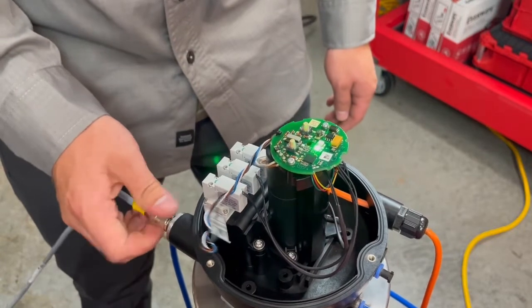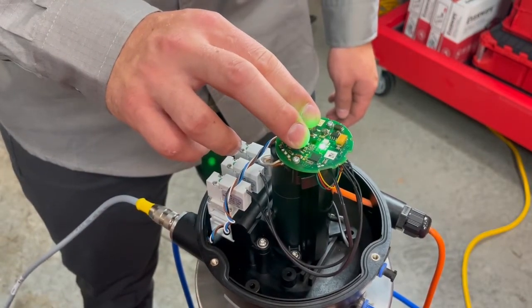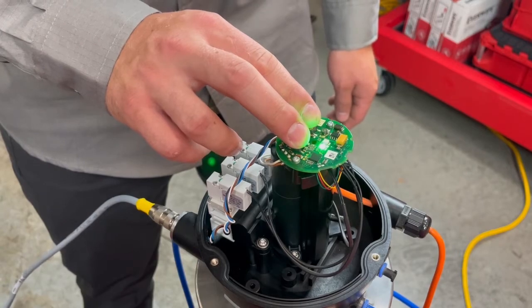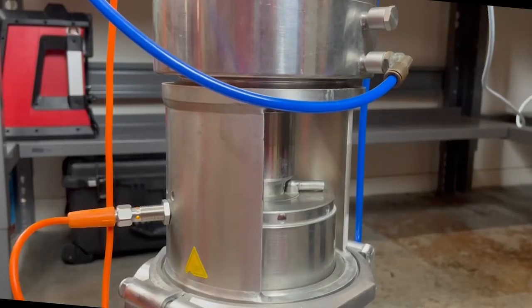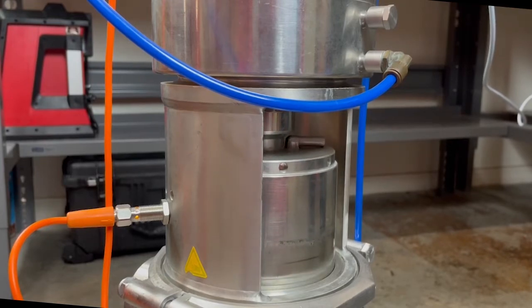Once power has been reconnected, press and hold the two buttons simultaneously for three to five seconds until you see a solid red LED. This activates the calibration and the valve will cycle through each of its positions.